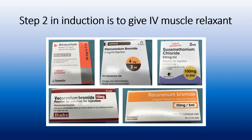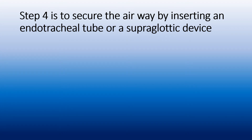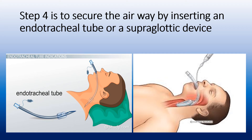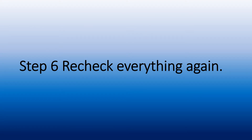Step two in induction is to give muscle relaxant. We have two main categories: the depolarizing muscle relaxant and the non-depolarizing muscle relaxant. Step three is to keep the patient ventilated using mask ventilation in most cases, until the muscle relaxant is completely functional and the patient is completely paralyzed. Step four is to secure the airway by inserting an endotracheal tube or a subglottic device, such as a laryngeal mask airway. Step five is to secure patient ventilation by connecting the patient to a ventilator. Step six is to recheck everything again — this is very important to make sure we did not miss anything during the process of induction.